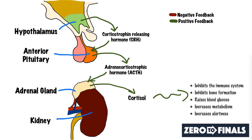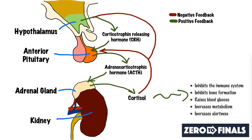Another key concept is negative feedback. When cortisol is flowing through the bloodstream, the cortisol itself targets the anterior pituitary and signals it to settle down production of ACTH — there's enough cortisol going around, so stop producing ACTH and the cortisol level will drop. It also targets the hypothalamus and tells it to do the same regarding CRH.